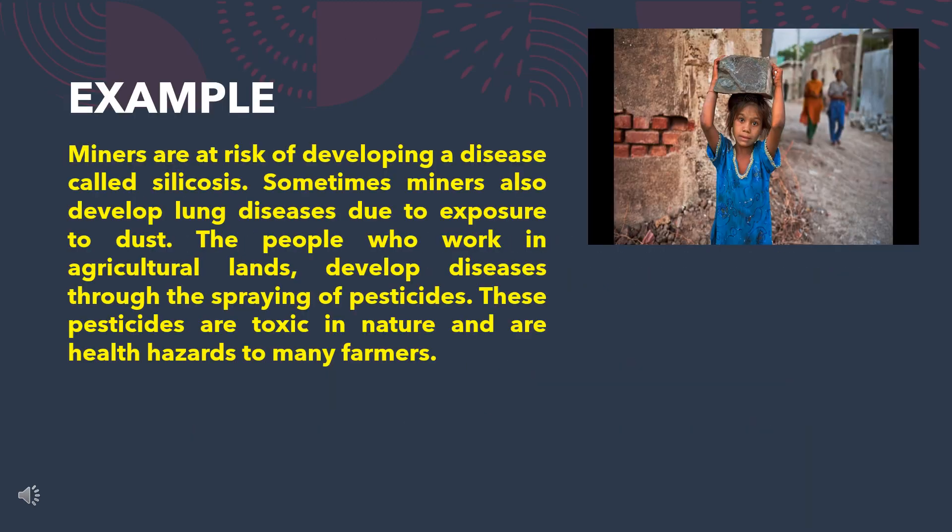Let's understand this concept with a better example. Miners are at risk of developing a disease called silicosis. Sometimes miners also develop lung disease due to exposure to dust. The people who work in agricultural lands develop disease through the spraying of pesticides. These pesticides are toxic in nature and are health hazards to many farmers.